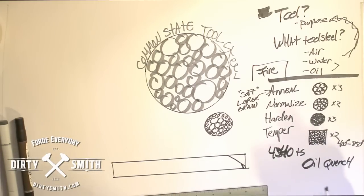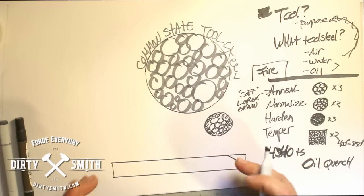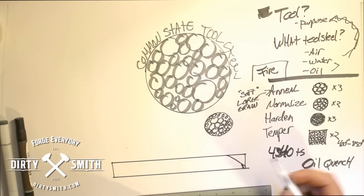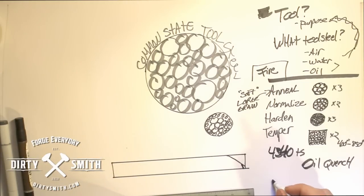You can buy oil quench, you can use old motor oil, peanut oil. I use motor oil or oil quench oil is what we have available at the shop. So after I annealed it and I forged it, I forged in the oranges and yellows.